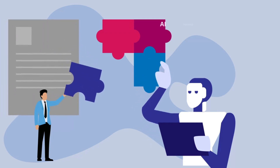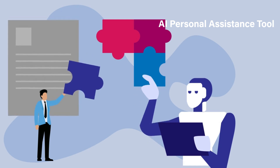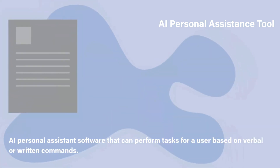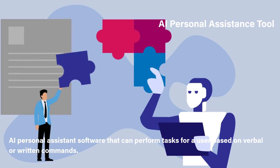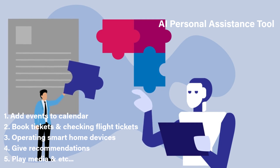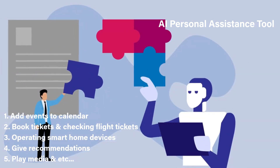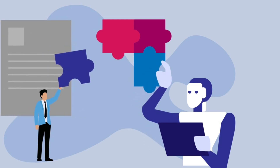The next topic is AI personal assistant tools. This is a software or tool that can perform tasks for a user based on verbal communication or written commands. It is also called basic AI or weak AI, powered by machine learning algorithms to understand and respond to user commands. Some of the daily tasks handled by personal assistant tools include adding events to calendar, checking flight statuses, operating smart home devices, giving recommendations, playing media, and managing to-do lists.